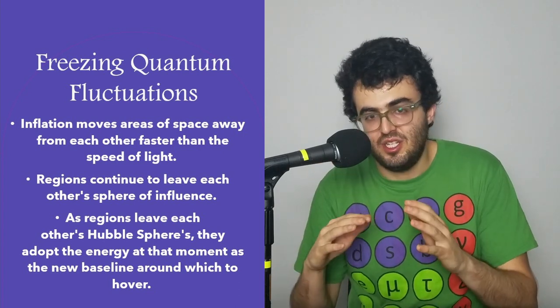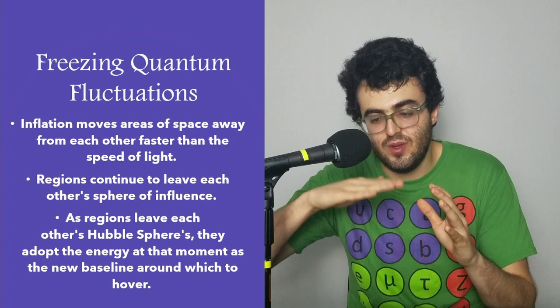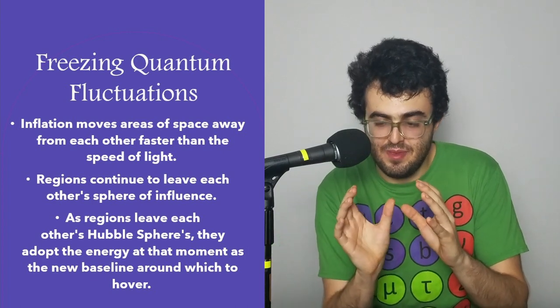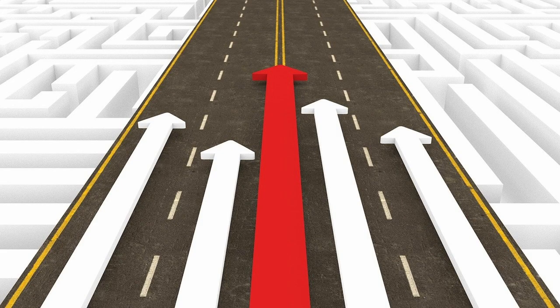If it were attached, its baseline would stay the same. It would just fluctuate around that baseline. But because it had, let's say, a slightly positive energy fluctuation, now that region, when it gets frozen out, when it moves faster than light from this other region, it doesn't know anymore.